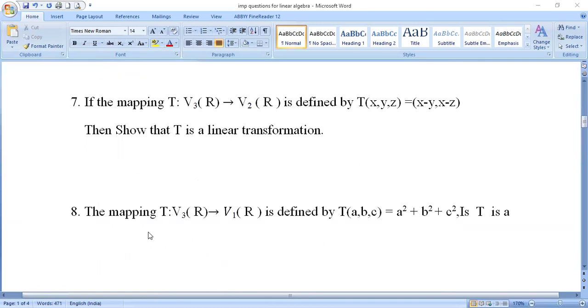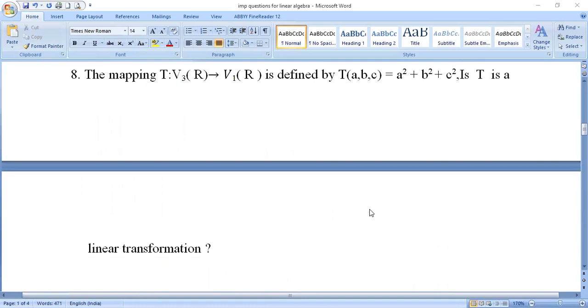Eighth question: The mapping T maps V₃(R) to V₁(R) defined by T(a, b, c) = a² + b² + c². Is T a linear transformation? We need to determine whether T is a linear transformation or not.